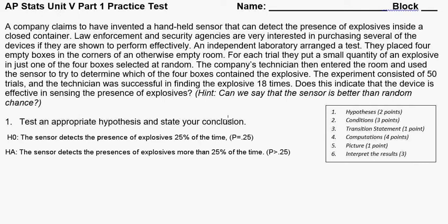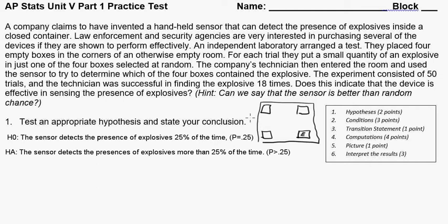I'm just going to explain a little bit of the problem. What's going on is that we have a box in each corner of the room. One of the boxes has been randomly selected, and we put explosives in just one of them. We want to bring in a sensor into the room and see if the sensor can find the box with the explosives.